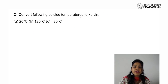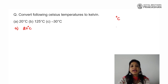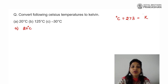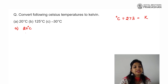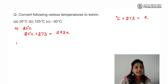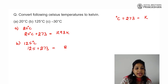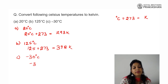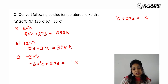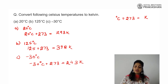Let us do some questions. Convert the following Celsius temperatures to Kelvin. The formula is simple: add 273 to the Celsius temperature to get Kelvin. One thing to note: we do not put a degree sign on Kelvin. So, 20 degrees Celsius plus 273 gives 293 Kelvin. For 125 degrees Celsius, adding 273 gives 398 Kelvin. For minus 30 degrees Celsius, we add minus 30 to 273, which means subtracting, giving 243 Kelvin. So we have converted the scales.